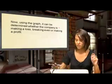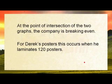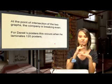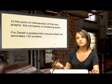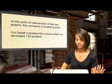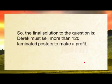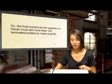Using the graph, it can be determined whether the company is making a loss, breaking even, or making a profit. At the point of intersection of the two graphs, the company is breaking even. For Derek's posters, this occurs when he laminates 120 posters. For more than 120 posters, the income graph lies above the expenses graph and he makes a profit; for fewer than 120, he makes a loss. Therefore, Derek must sell more than 120 laminated posters to make a profit.